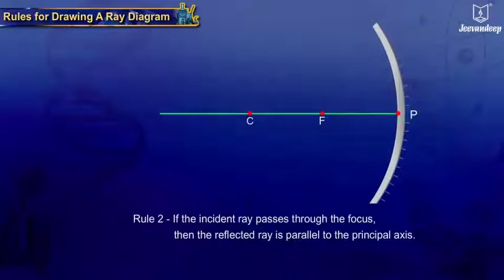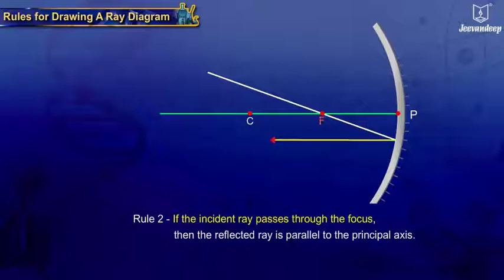Rule 2: If the incident ray passes through the focus, then the reflected ray is parallel to the principal axis.